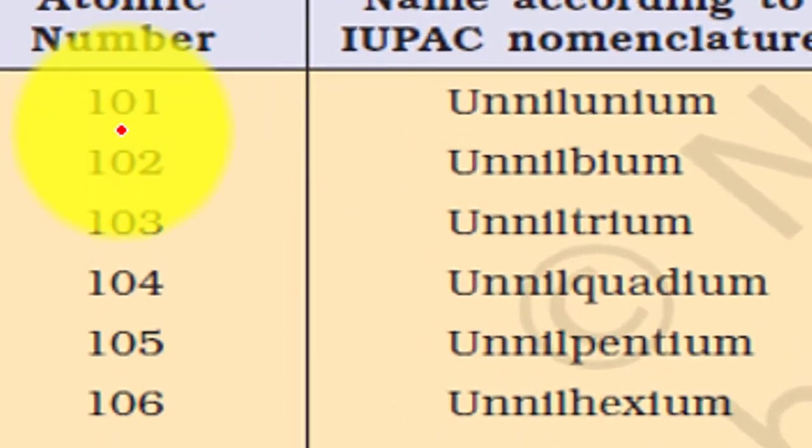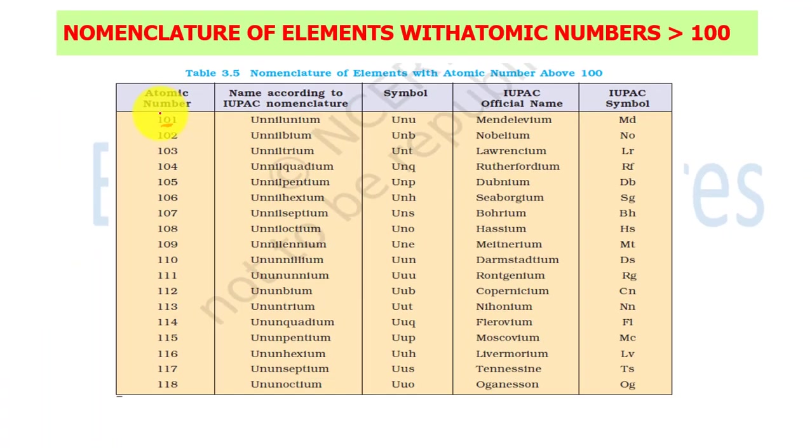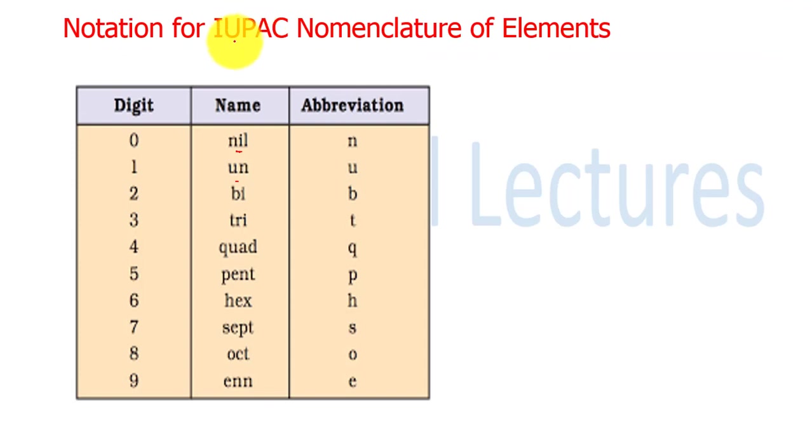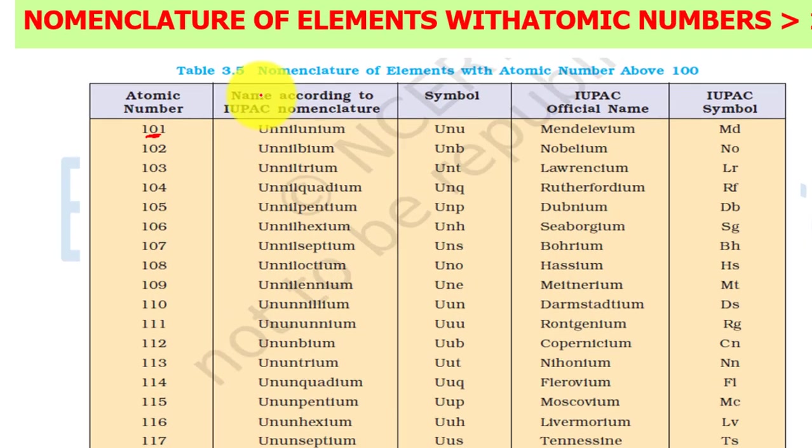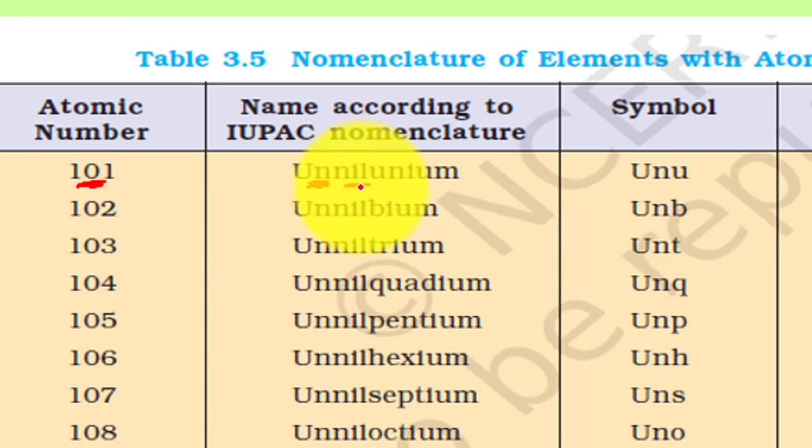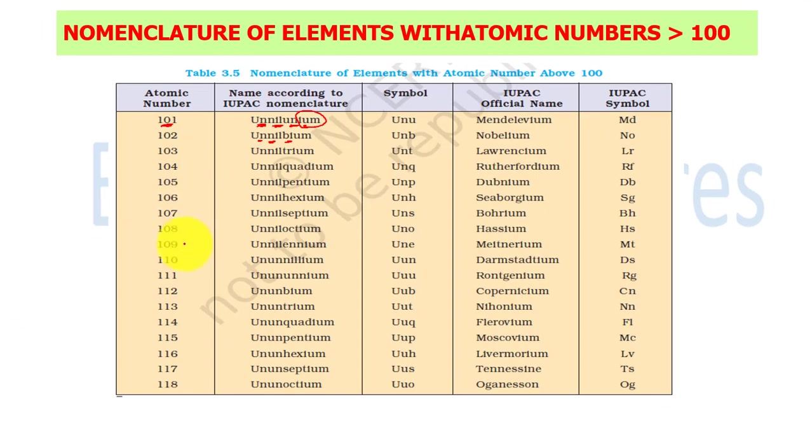Let's see how this naming works. 101: for 1 it is un, so here un. For 0 it is nil. Then again 1, that is un. Then ium at the end. So it is ununilium. 102 will be un-nil-bi-ium, unilbium. 103 is uniltrium. Similarly, 118 has un-un-oct-ium, ununoctium. Similarly, ununseptium. These are the symbols according to this nomenclature.